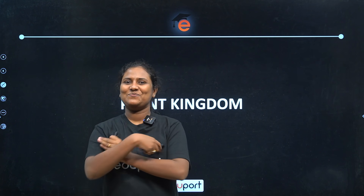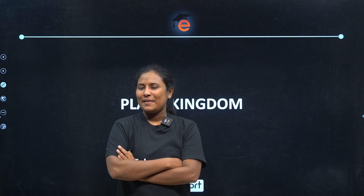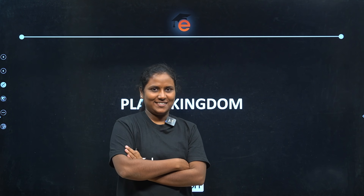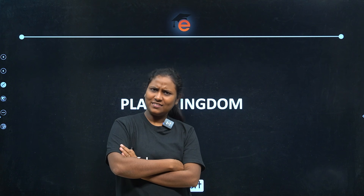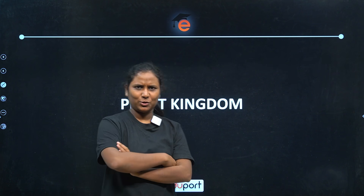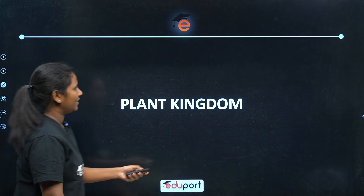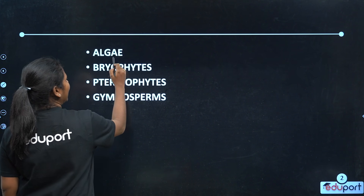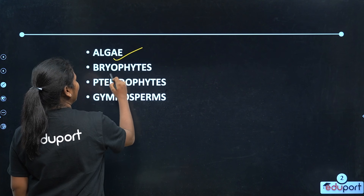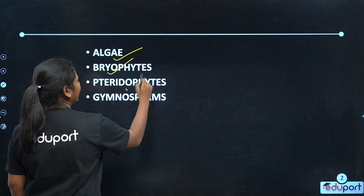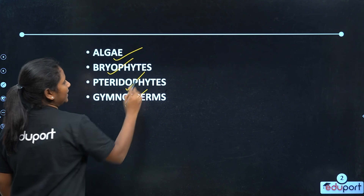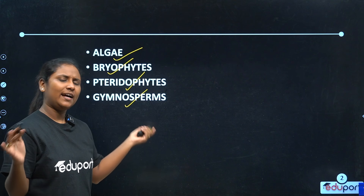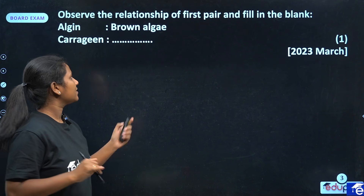Hello! So, in the Plant Kingdom, from the previous questions we will study these topics: Algae, Bryophyte, Pteridophyte, Gymnosperms, and Angiosperms. These are the three main question areas.